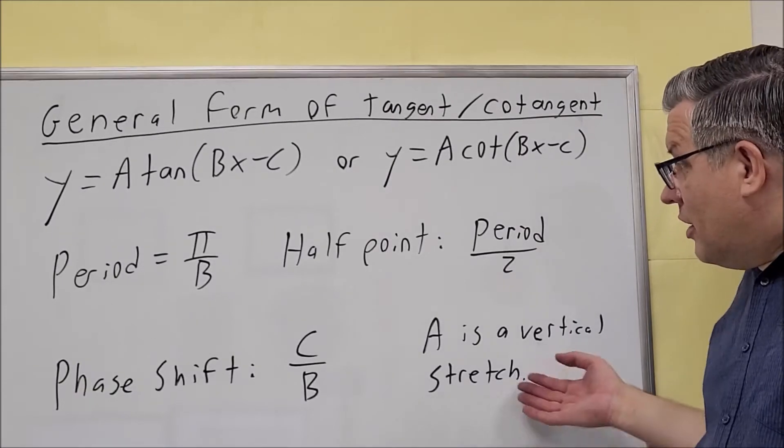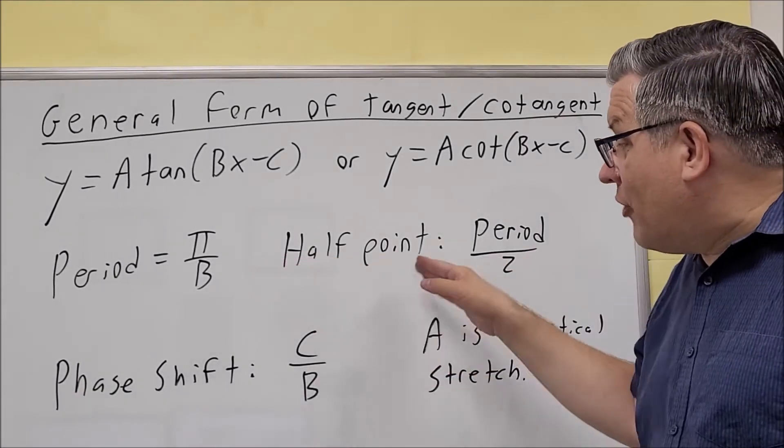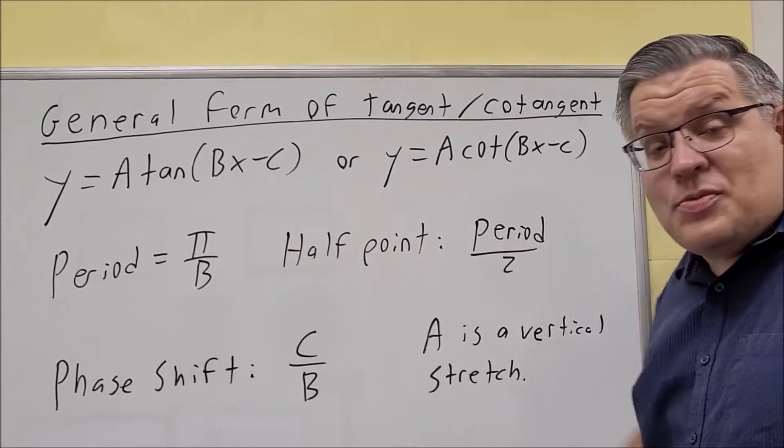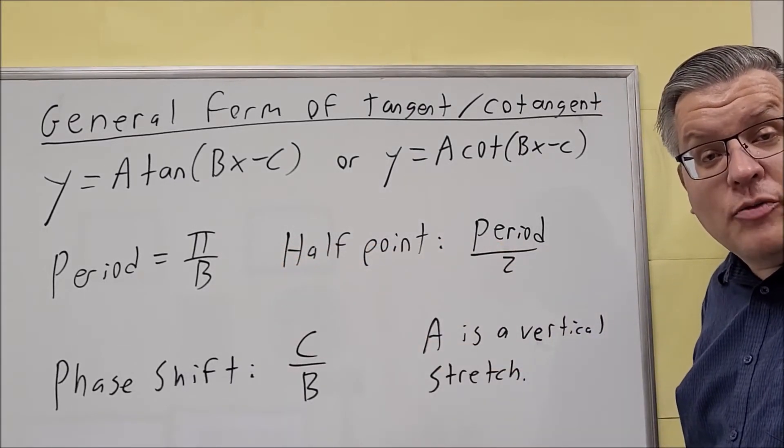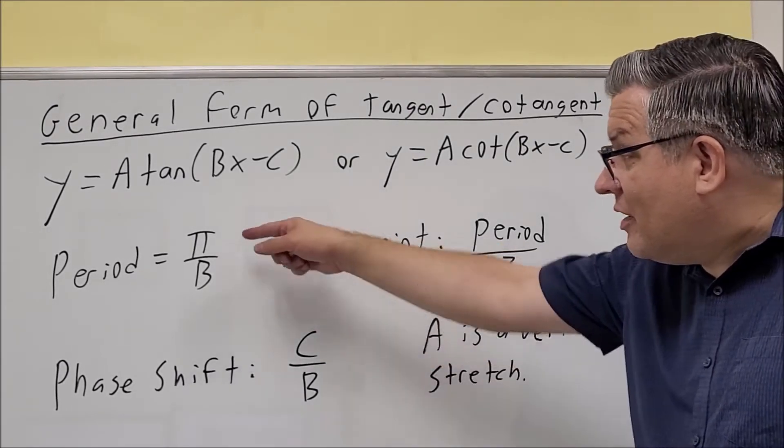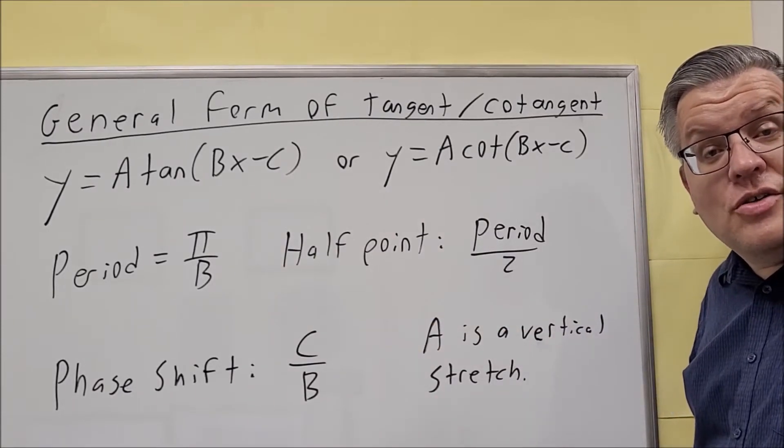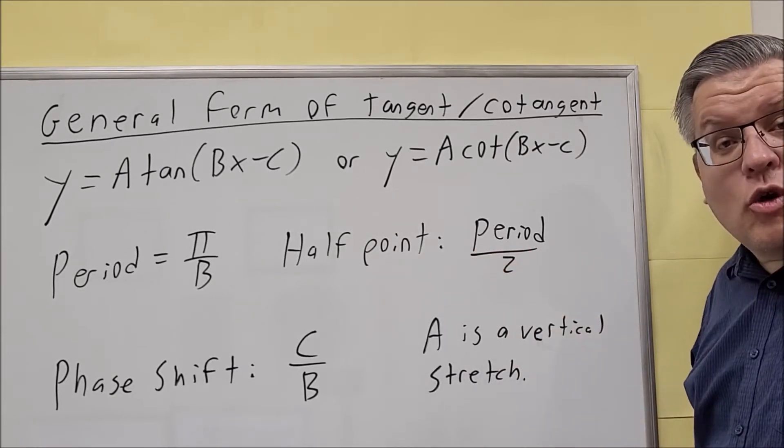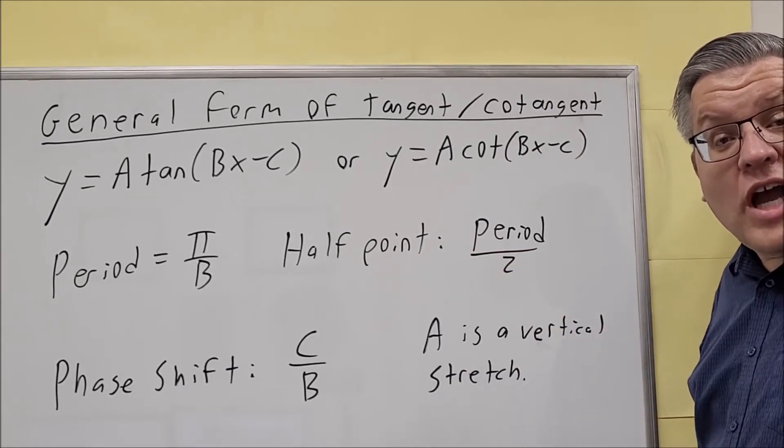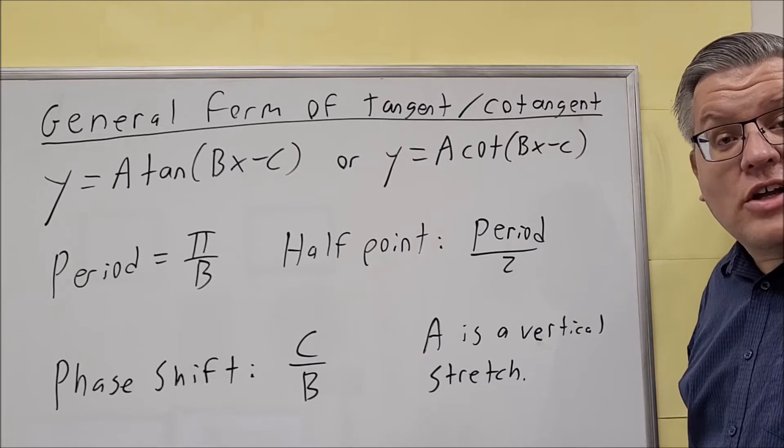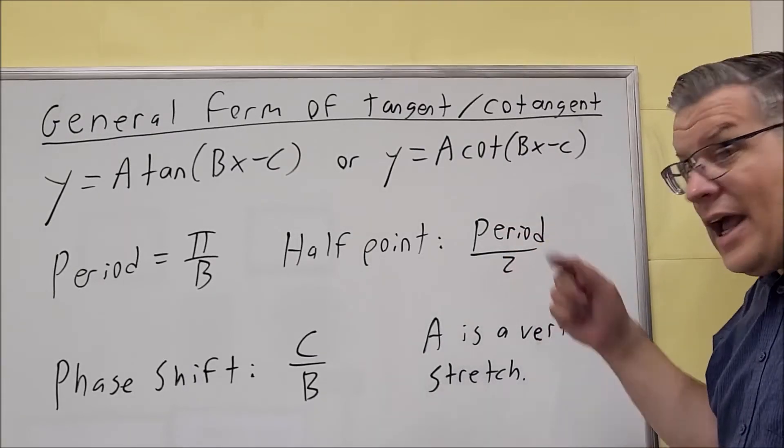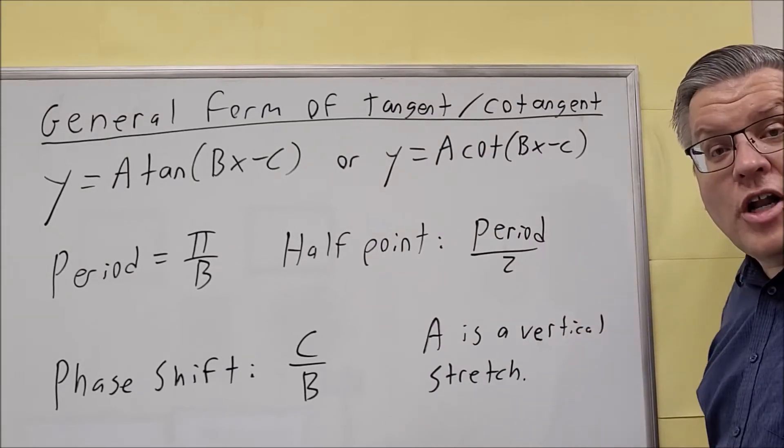So there's no amplitude here, and so we only have period, half point, and phase shift as the different formulas. Now the period, notice it's π over b instead of 2π over b, because we just mentioned previously that the period of tangent and cotangent is π and not 2π. The half point is what we're going to be using when we get into the graphs of these. When you did the sine and cosine graphs, you found the quarter point, but with tangent and cotangent, it's the half point. So period divided by 2.